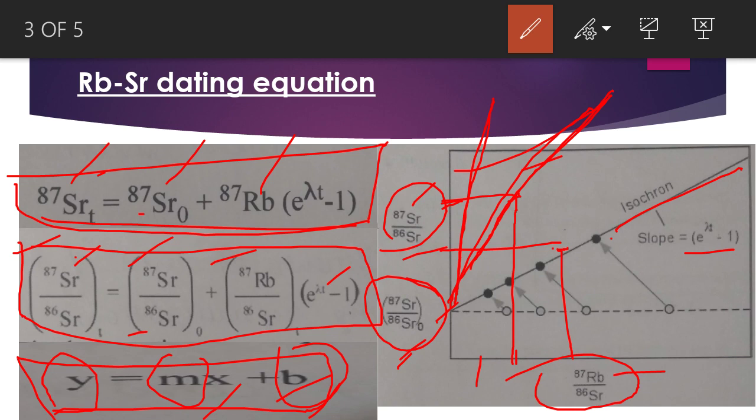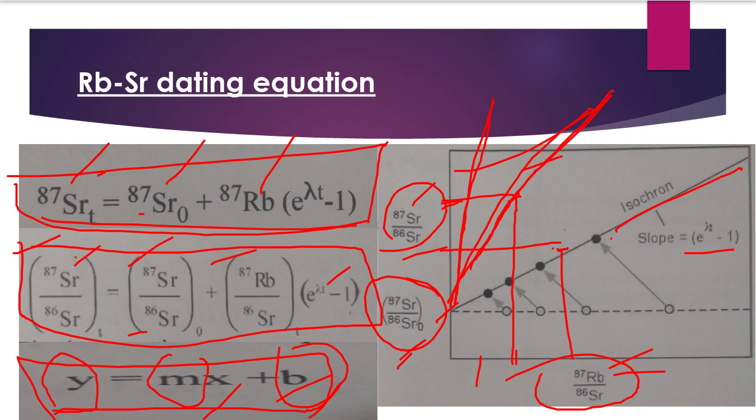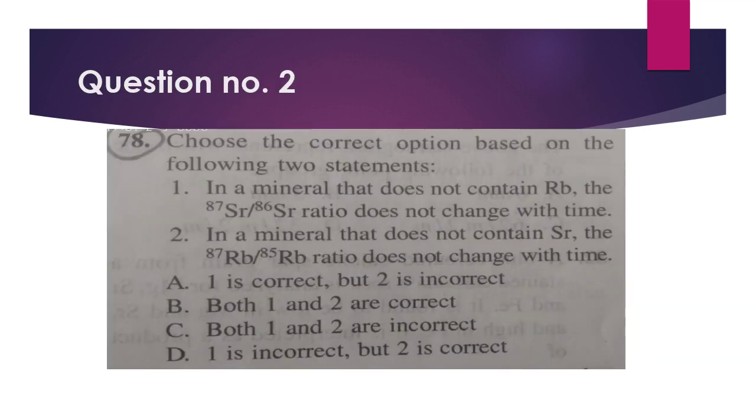While rubidium is not homogeneous, it is distributed unevenly in different types of minerals. Now let us see our question.